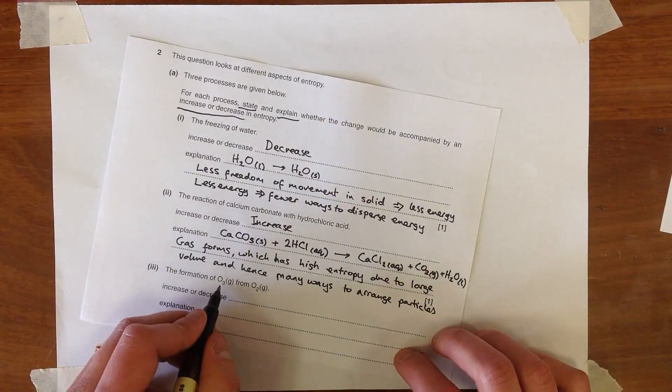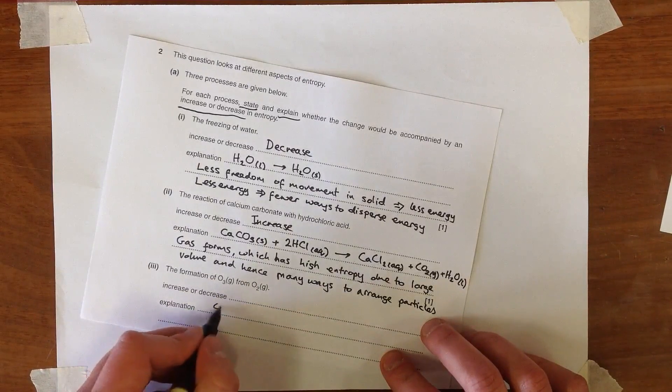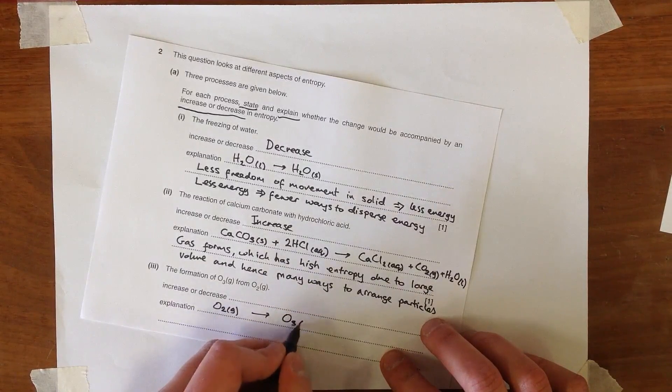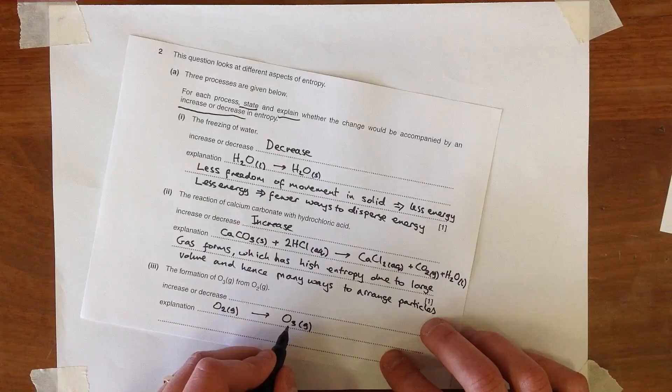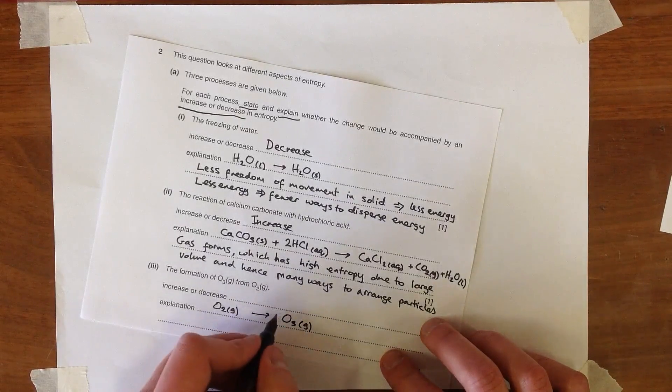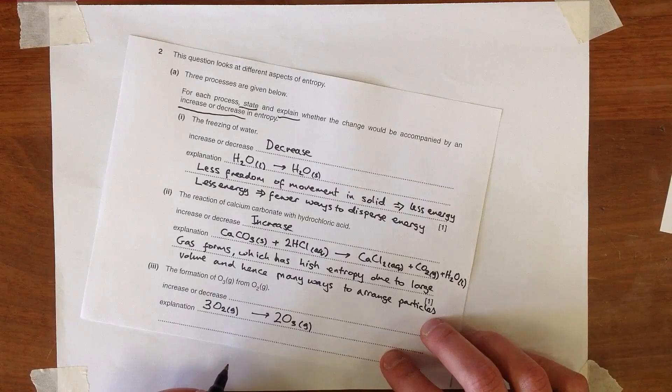Now, the formation of ozone from oxygen. Again, we start with an equation. If we're going to start with oxygen gas and form ozone, which is also a gas, in order to have three atoms here, we've only got two over there, so we're going to have to multiply this by two, and then we need three oxygen molecules to make two ozone molecules.